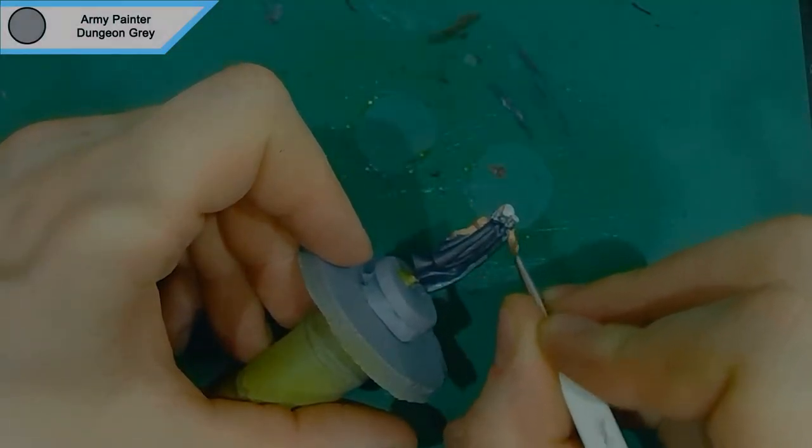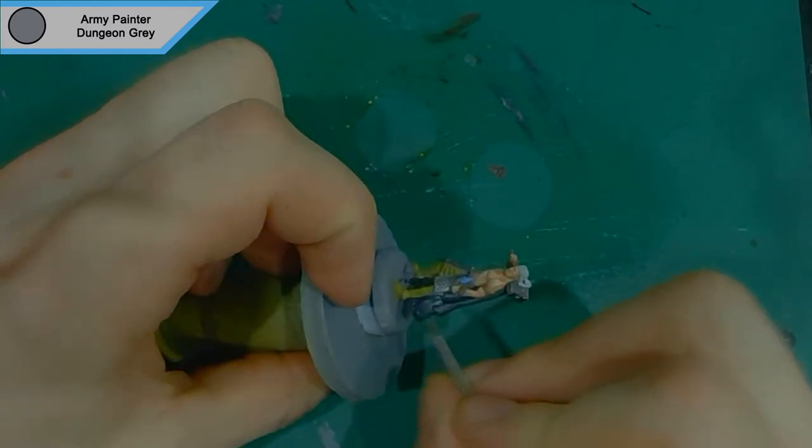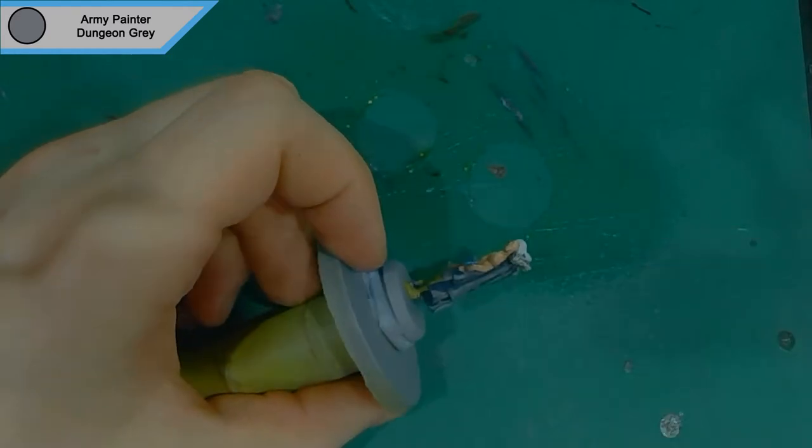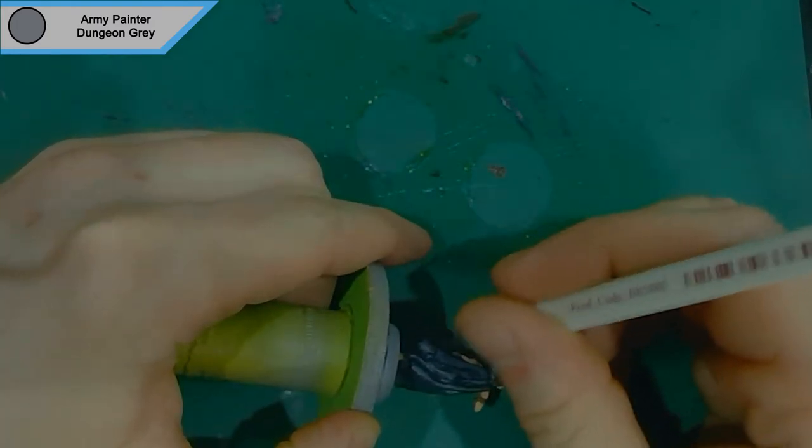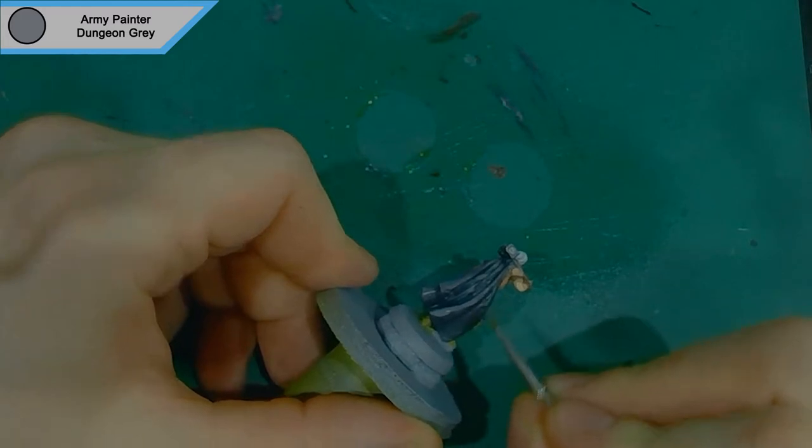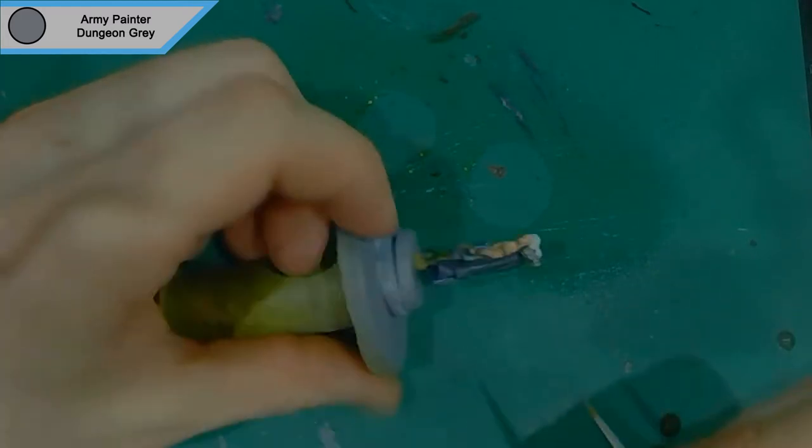Now we're moving on to highlights for the cape, which is Army Painter's dungeon gray. It's sort of like my mid-level gray, in between necromancer's cloak and ash gray. It's just enough that it looks like light is now just brushing across the raised areas, and then once the wash goes on there, that will become essentially one thing.